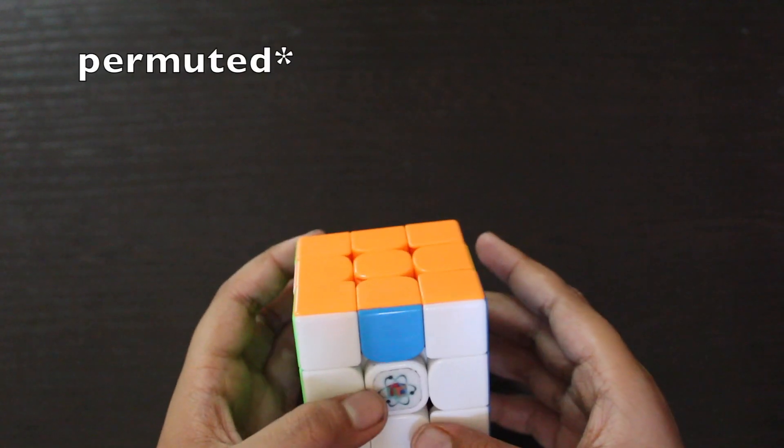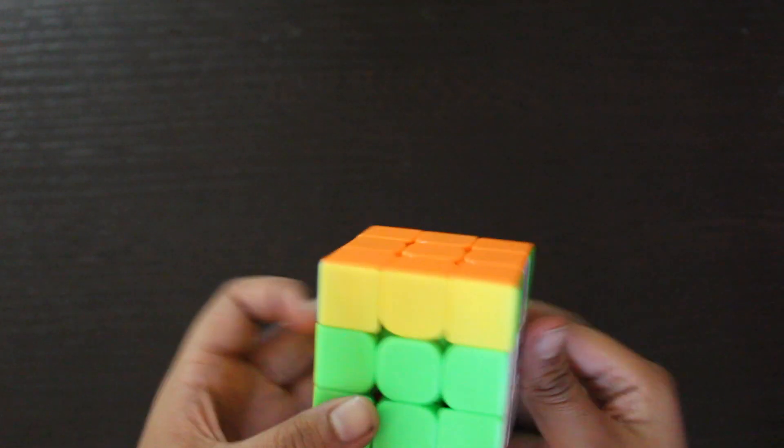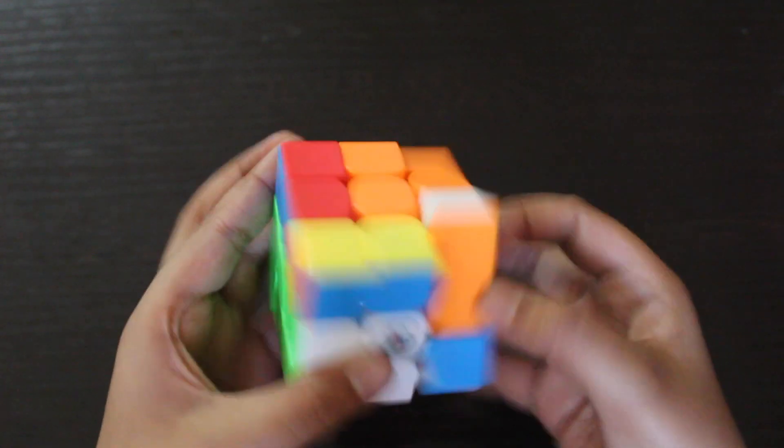So for example this, and we do an algorithm and solve the cube. That is what is basically an EPL. Let's get on the first EPL which is the UB perm.